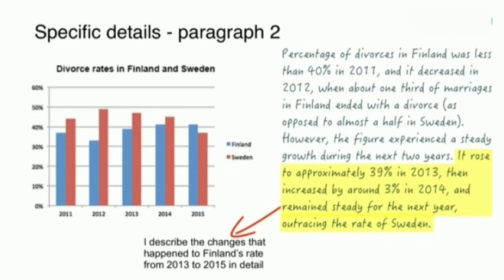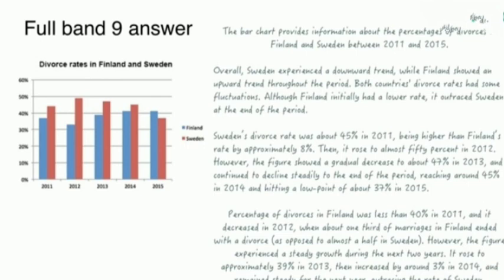I have already uploaded a video on comparison vocabulary — I will put the link on this channel, so please do watch it. Overall, you can see what we have discussed for this graph: introduction, overview, body 1, body 2. If you still want to describe an additional line as an overall, you can additionally add a last passage: 'To recapitulate, Finland and Sweden followed opposite trends in the divorce rate for this time period.'